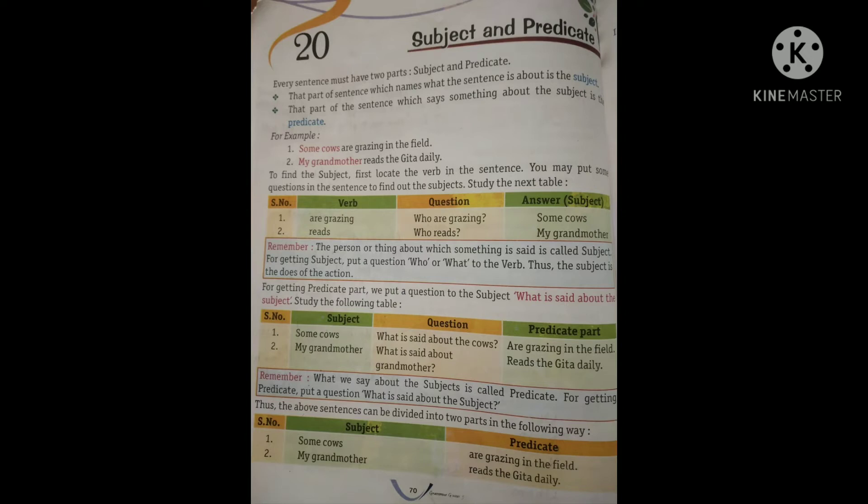Aisa zaruri nahi hai ki subject hamesha pehle aayega aur predicate baad mein aayega. Kabhi kabhi predicate bhi pehle aa sakta hai, subject baad mein aayega. You have to know, aapko yeh samajhna padega ki subject hum usko kehte hai jo jiske baare mein sentence ho. Sentence jis person ke, thing ke, ya animal ke baare mein, usko hum bolte hain subject. So subject pehle bhi aa sakta hai aur baad mein bhi aa sakta hai.